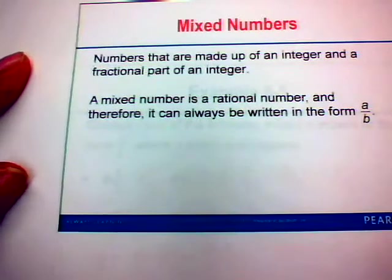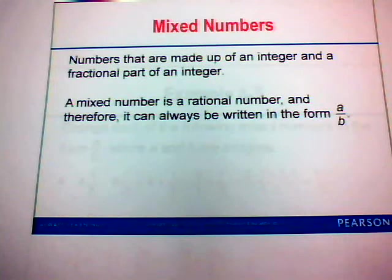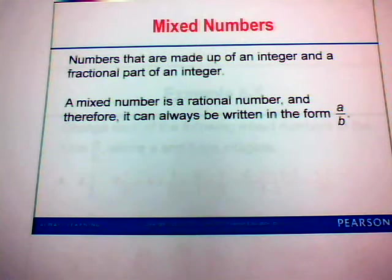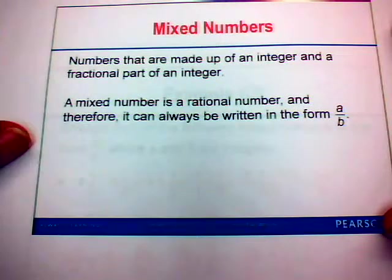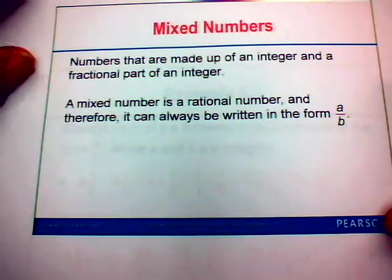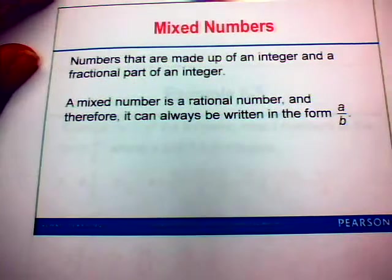Let's look at mixed numbers. Numbers that are made up of an integer and a fractional part of an integer are considered to be mixed numbers. A mixed number is also a rational number because it can always be written in the form a over b. Mixed numbers have a whole number and then a fractional part, and they are rational numbers as well.